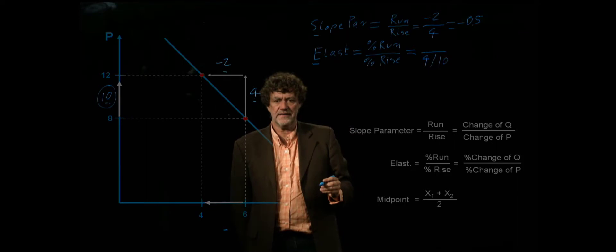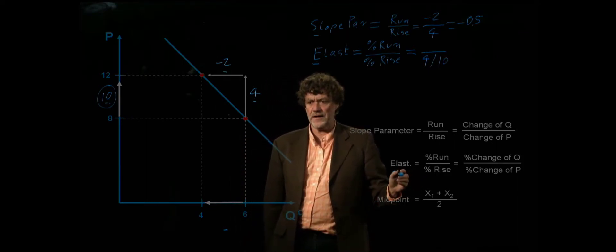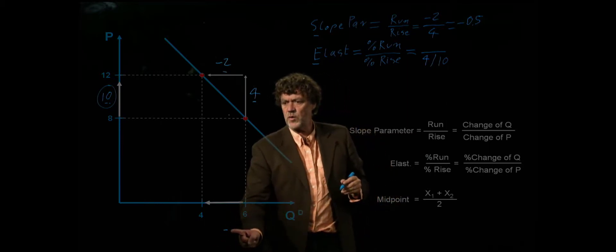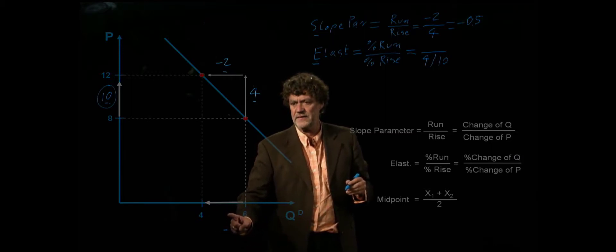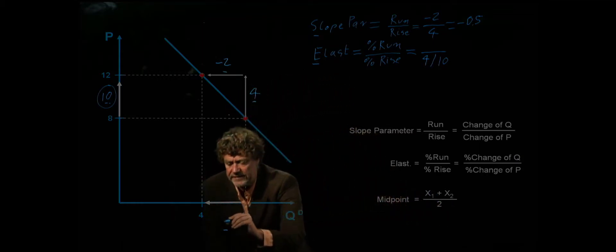The midpoint formula tells us add the two numbers and divide by 2. Let's do that for the quantity. We want to find the quantity here between 6 and 4, the midpoint. So we add 4 plus 6 which is 10 divided by 2, and as a result as a midpoint we get 5.